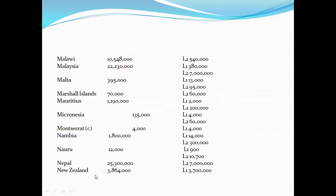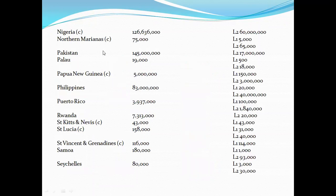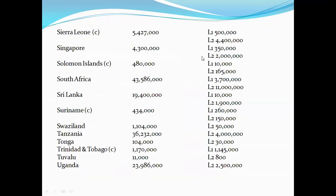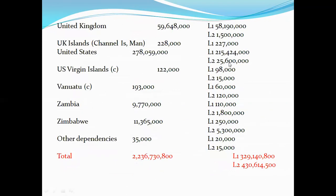Malaysia has both first and second language users of English. New Zealand has only first language users with no second language users. Singapore has both first and second language users. United Kingdom has first and second language users. United States has first language users. In total, the first language user count is 320 million, and the second language user count is 430 million people of this world who use English as a means of communication.